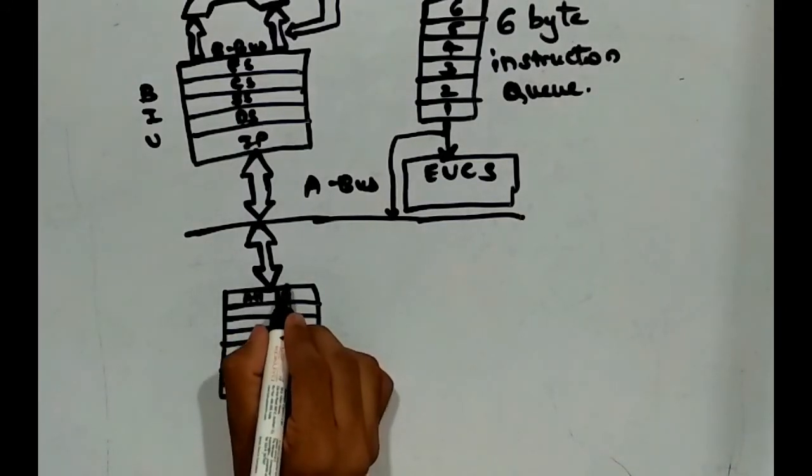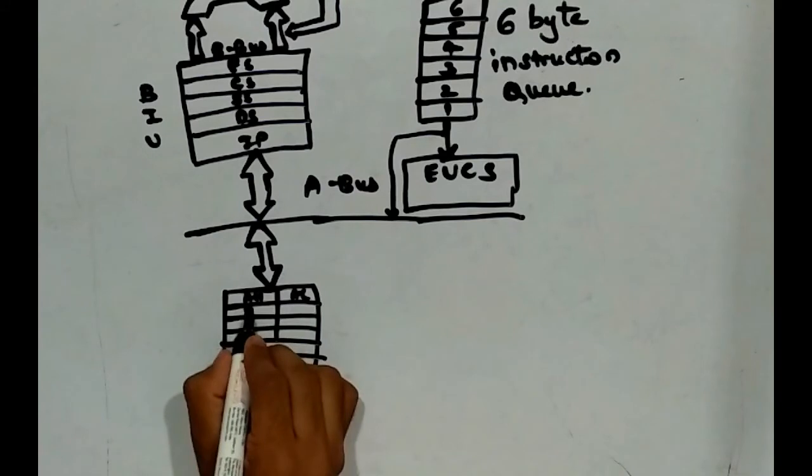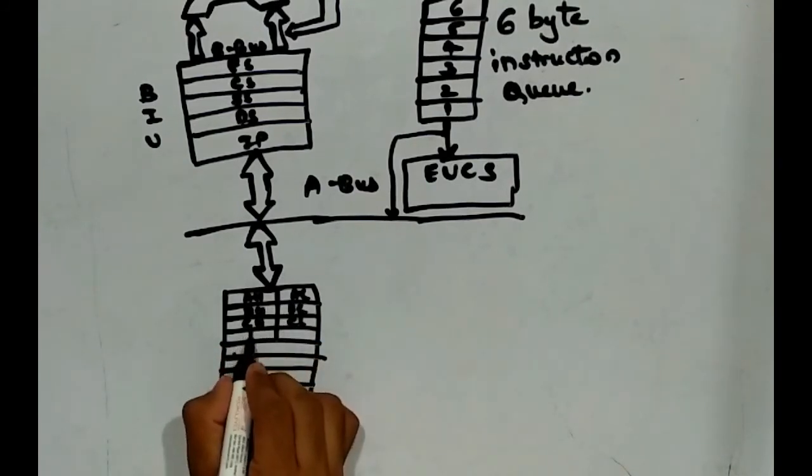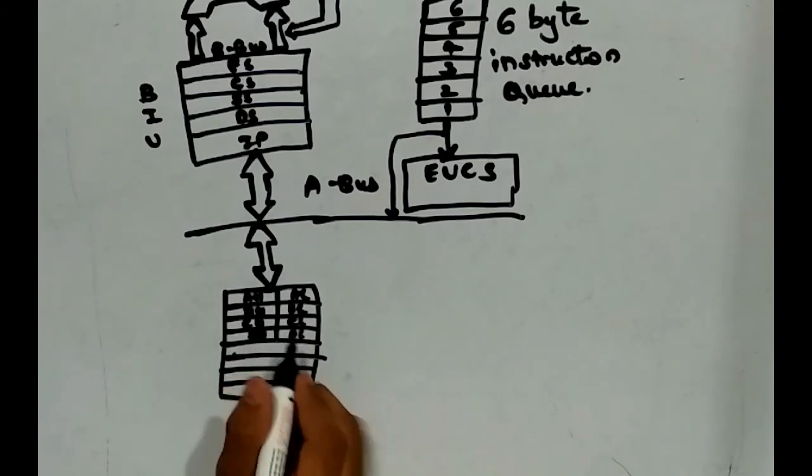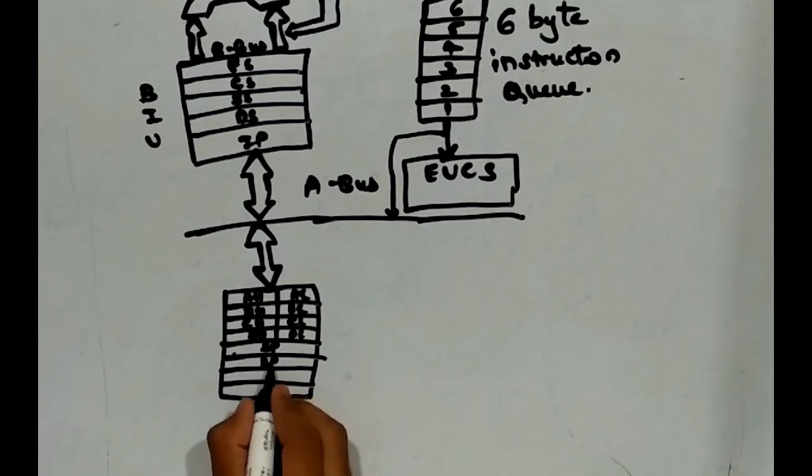AH, AL, BH, BL, CH, CL, and DH, DL. And here, SP, BP, SI, and DI.